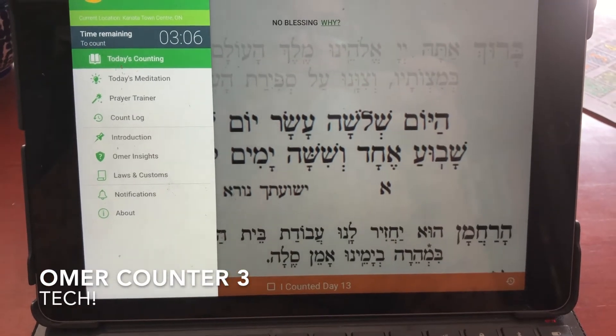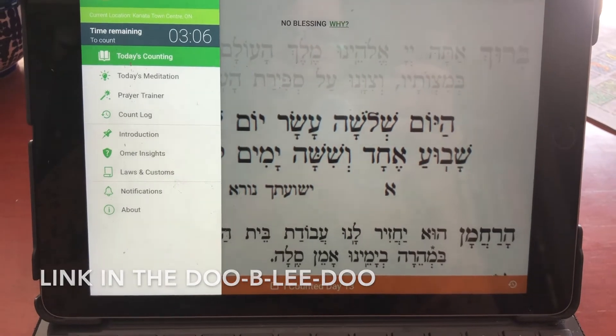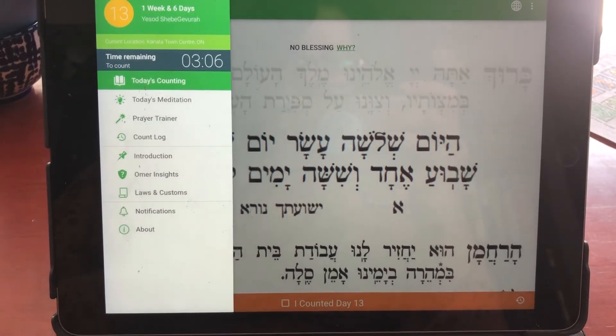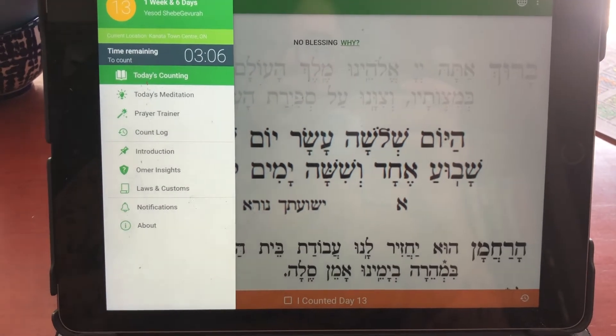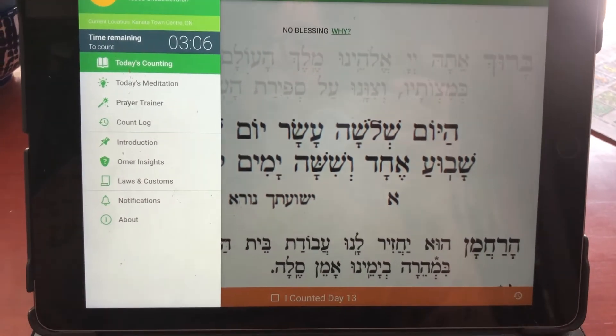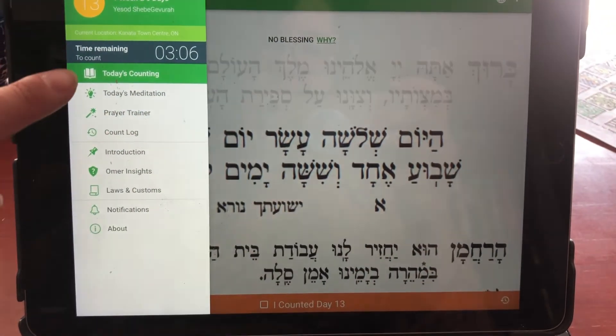And for anybody looking for a way to count the Omer that has a little more hands-on brachot and maybe some daily meditations, you should definitely check out some of the apps available on various devices. This one is actually called the Omer counting app that I have for my iPad, and you can see on the side here, it has today's counting with the bracha, the blessing already for me.